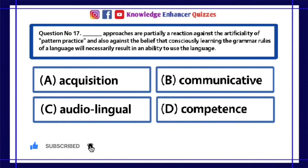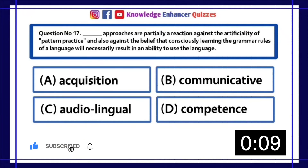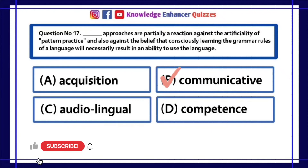Question Number 17: Dash approaches are partially a reaction against the artificiality of pattern practice, and also against the belief that consciously learning the grammar rules of a language will necessarily result in an inability to use the language. A. Acquisition, B. Communicative, C. Audiolingual, D. Competence. Option B is the right answer.